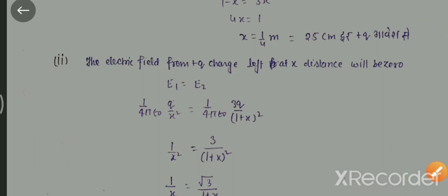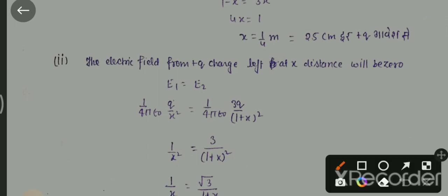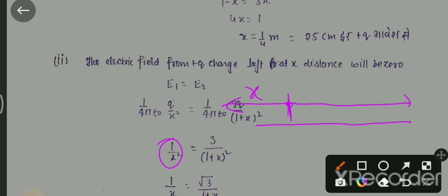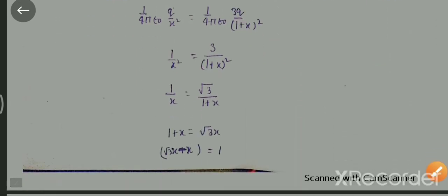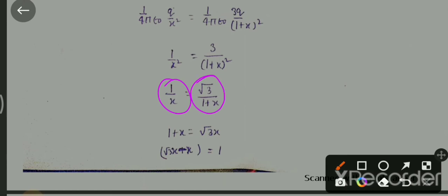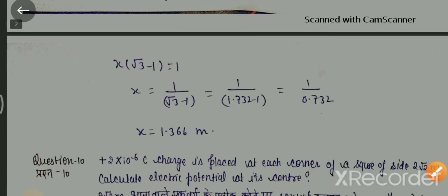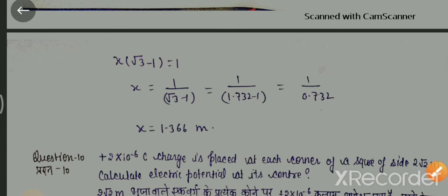अगर हम electric field निकालें, तो दोनों points पर electric field बराबर होना चाहिए। हम बात करते हैं: plus Q वाले से बाहर की तरफ X distance पर होगा। plus Q से distance होगा X, और दूसरे वाले से distance होगी 1 meter + X meter। दोनों को लेकर इस तरह से निकालते हैं। Root करने के बाद पता चलता है: 1 upon X = root 3 upon (1 + X)। Total solve करने पर result आता है: X = 1.366 meter।